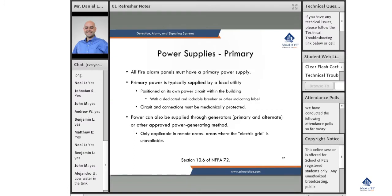Power supplies - the primary one, and we'll follow up the next slide on secondary. All fire alarm panels must have a primary power supply. This is typically your power supply coming out of the wall, the building power supply supplied by the local utility.